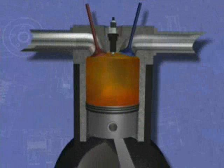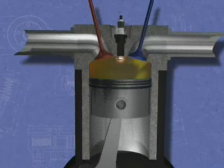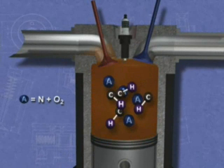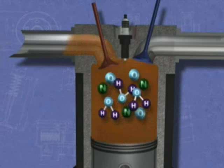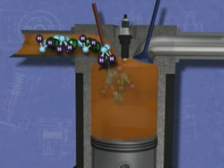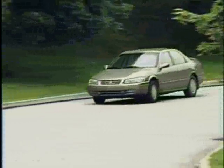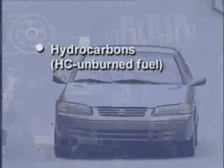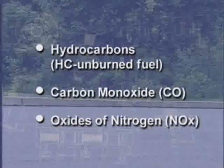When air and fuel are ignited in the combustion chamber, the mixture is transformed through a chemical reaction brought about by heat and pressure. Under ideal conditions, this process yields harmless gases such as oxygen, nitrogen, and water vapor. In reality, however, the combustion process generates several harmful pollutants, including hydrocarbons or unburned fuel, carbon monoxide, and oxides of nitrogen.